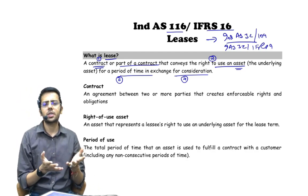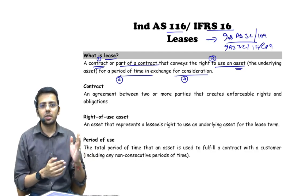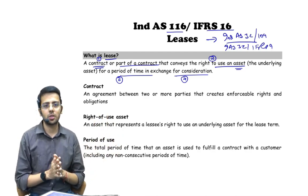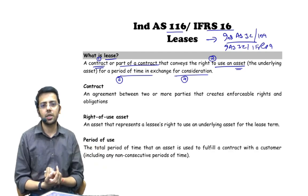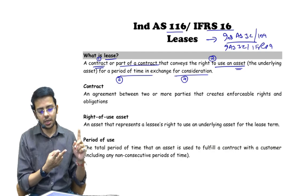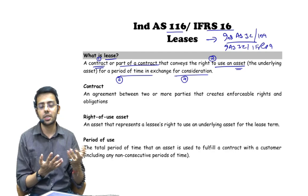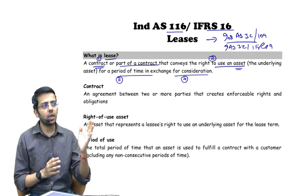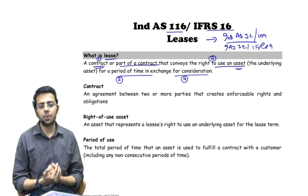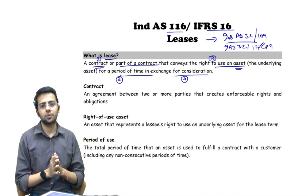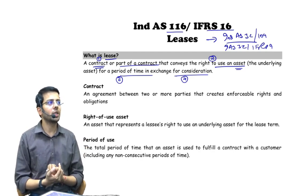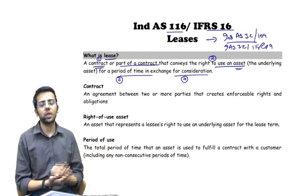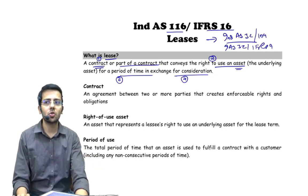If your friend gives you his car for three years but asks for no money, this is not a lease because the consideration condition is not satisfied. If you provide CA or internal audit services at 10,000 rupees per month, there is a contract, period, and consideration, but it is a service — not an asset — so it is not a lease. If you take a machine at 10,000 per month but the period is undefined, or you use a relative's machine with no contract, these are also not leases.